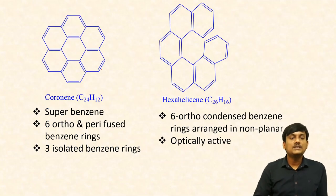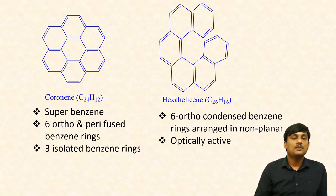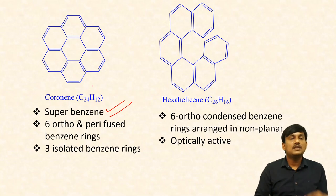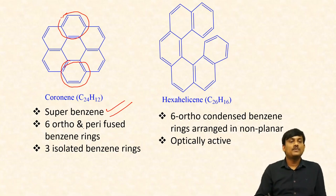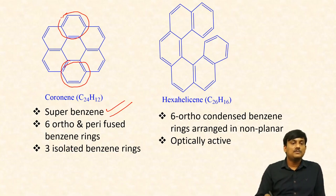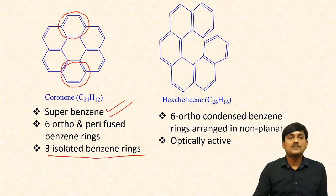And coronene — in this case, seven benzene rings are fused. Here, six benzene rings are fused with the middle benzene ring. It is also called as super benzene. In coronene, you can find three complete benzene rings — that's why it is called super benzene. These are six peri-fused benzene rings, and you can find three isolated benzene rings in one of the resonance structures of coronene.